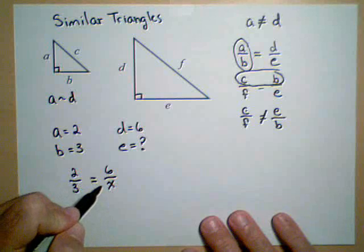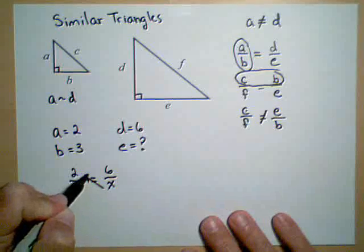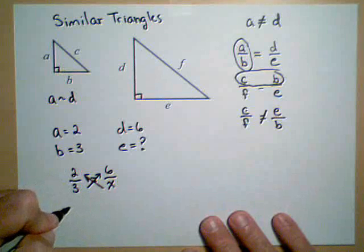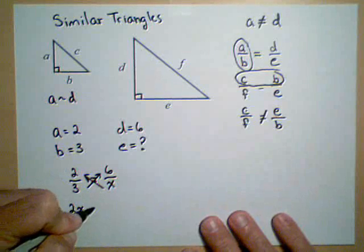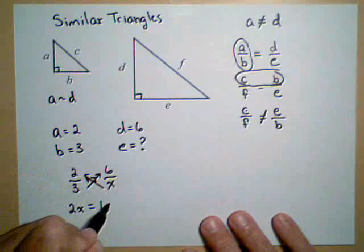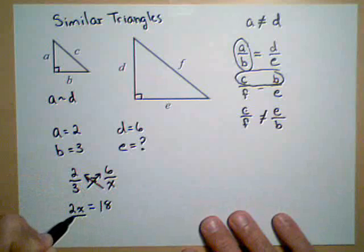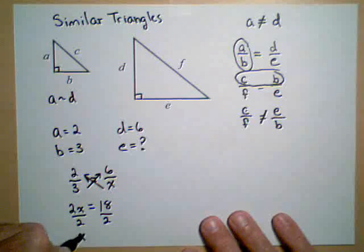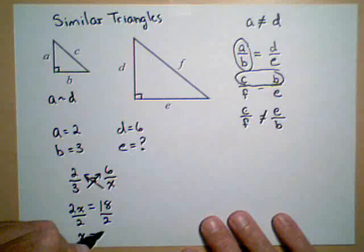To solve this proportion, I like to do cross multiplying, which is multiply the denominator by the other side. That leaves me with 2x equals 6 times 3, which is 18. I can divide both sides by 2, and I get that the missing side E is 9.